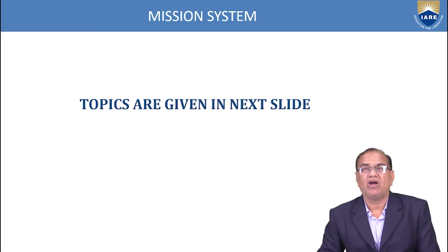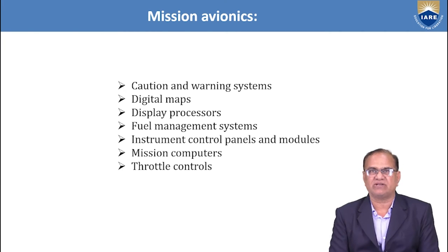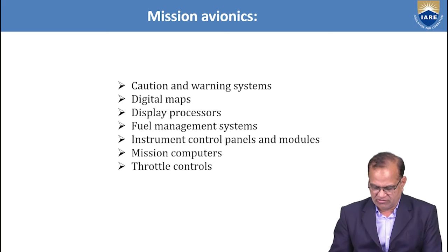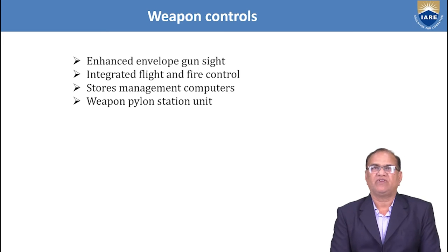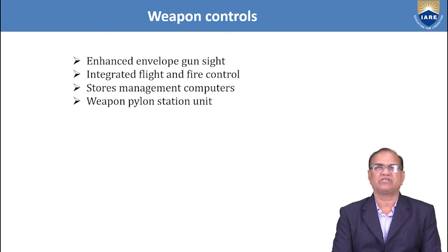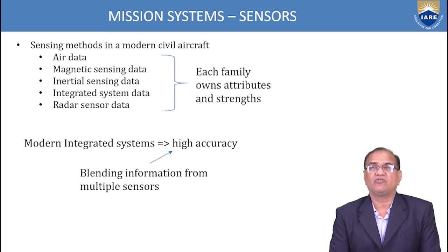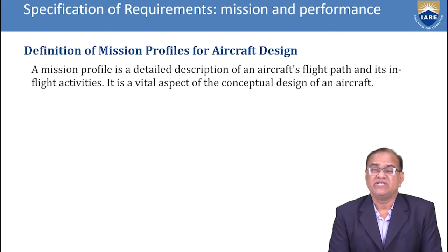Now I am talking about the mission system. We have the caution and warning system, digital maps, display processor, fuel management system, instrument control panel and modules, mission computer, and throttle controls — these are the avionics used for the mission control system. After that we have the enhanced envelope gun sight for the weapon control system, integrated flight and fire control system, store management computer, weapon pylon station, and unit. In the mission sensors we have the air data system, magnetic sensing data system, inertial sensing, integrated systems, and the radar system.